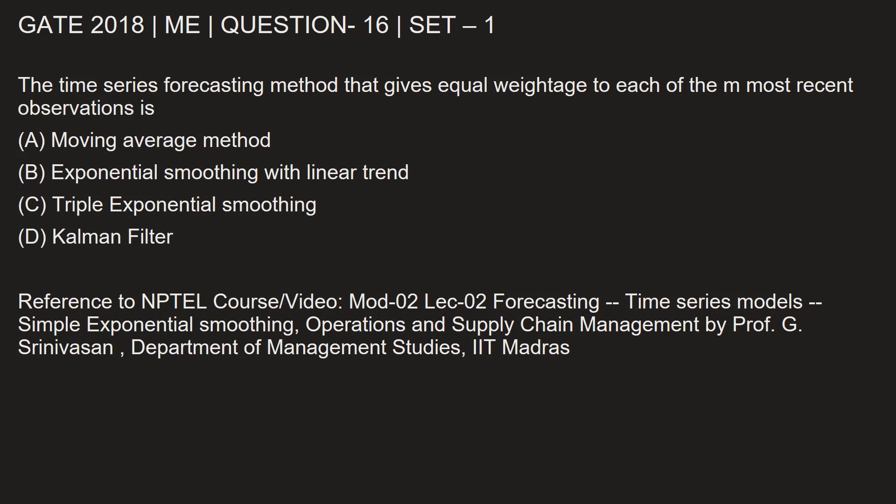Option A: Moving average method. Option B: Exponential smoothing with linear trend. Option C: Triple exponential smoothing. Option D: Kalman filter method.